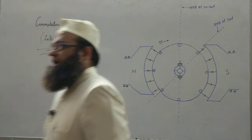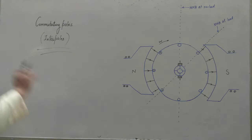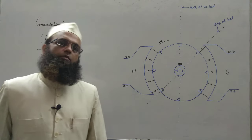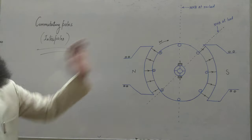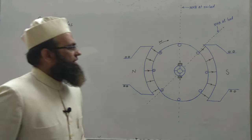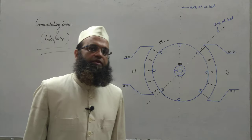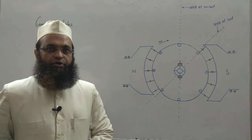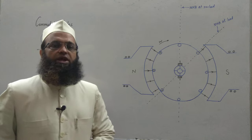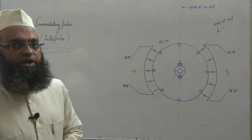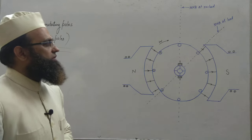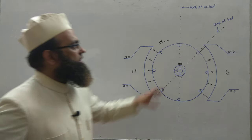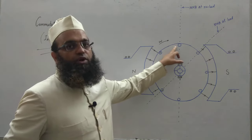Let us discuss the next approach known as commutating poles or interpoles, used to solve the problem of commutation — that is, sparking at the brushes. We know that sparking at the brushes occurs due to two types of induced voltages when the machine is loaded: one is the inductive voltage kick, that is L·dI/dt voltage, and the other is the induced EMF in the coils undergoing commutation due to MNA shift caused by armature reaction.